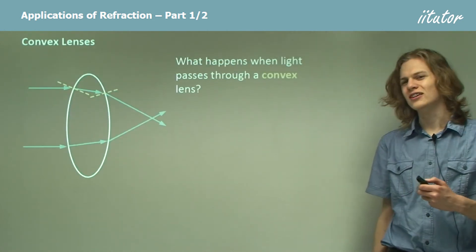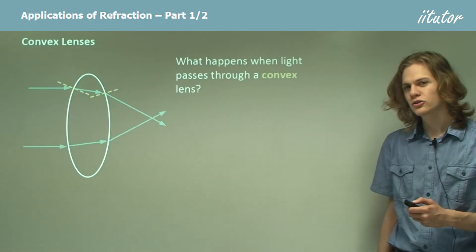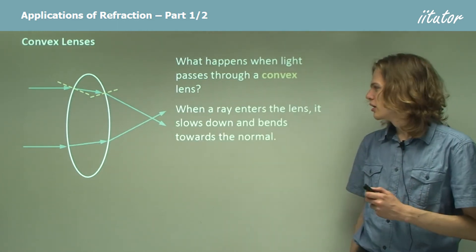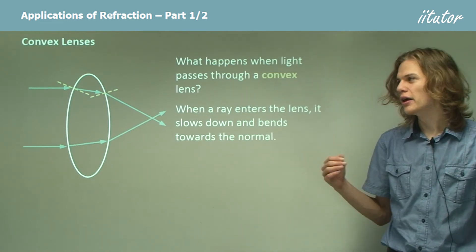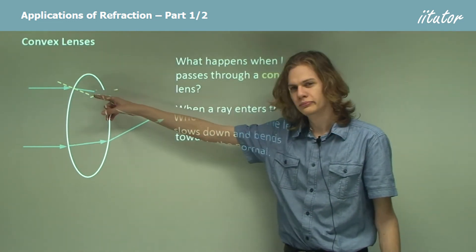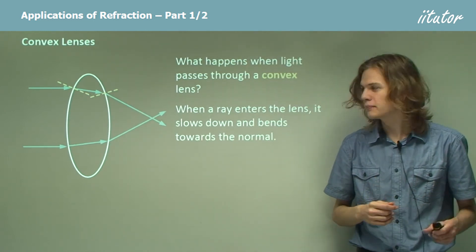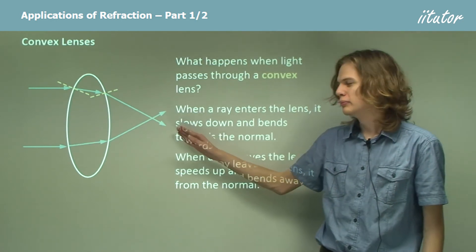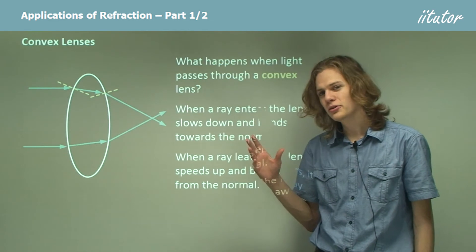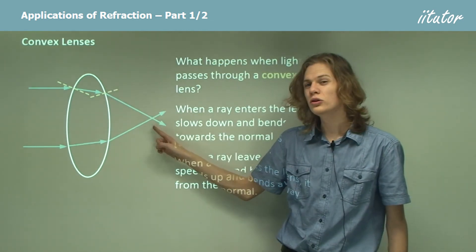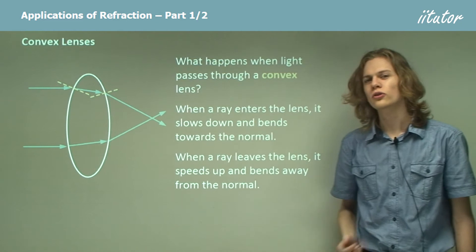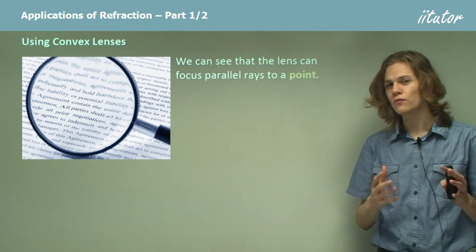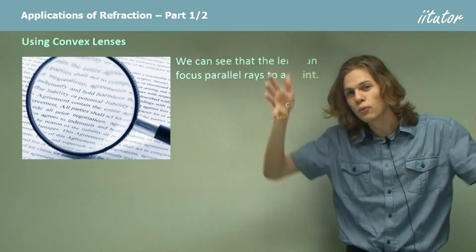Which brings us on to convex lenses. Once again, we can see what will happen when light passes into the new medium. When the ray enters the lens, it will slow down and bend towards the normal — towards the dotted yellow line. When it exits, it'll speed up and bend away from the normal, away from the dotted yellow line. But in both cases, the rays of light will get bent towards this central point called the focus of the lens. So if we have parallel rays falling into a convex lens, they'll be focused into a point.